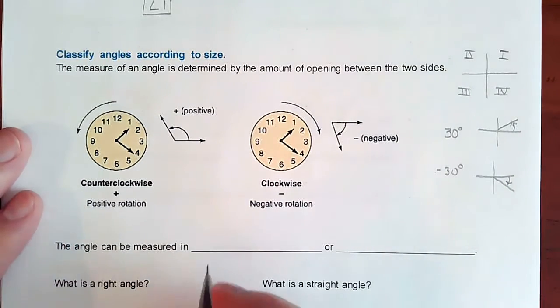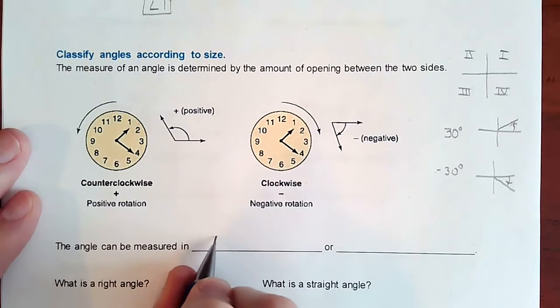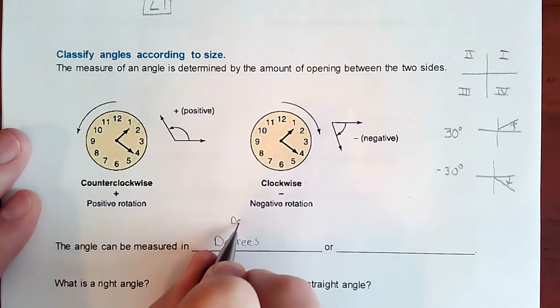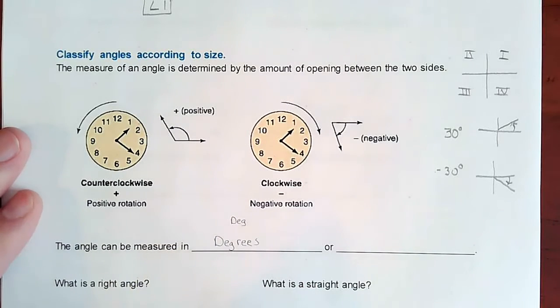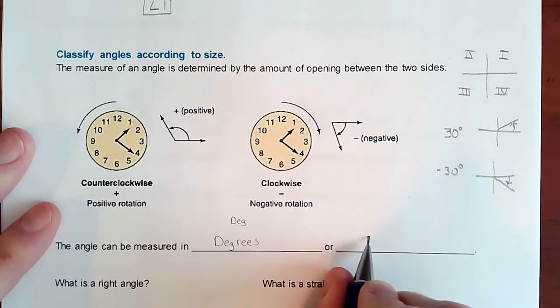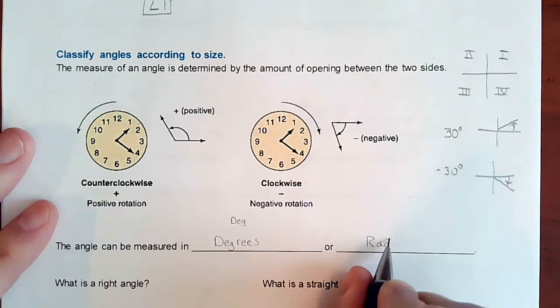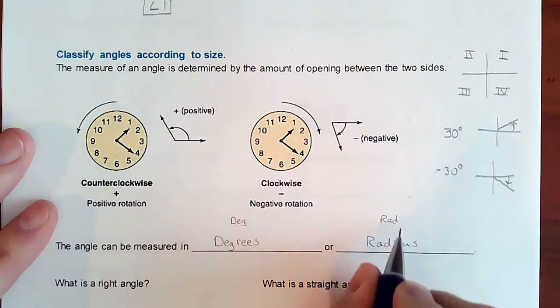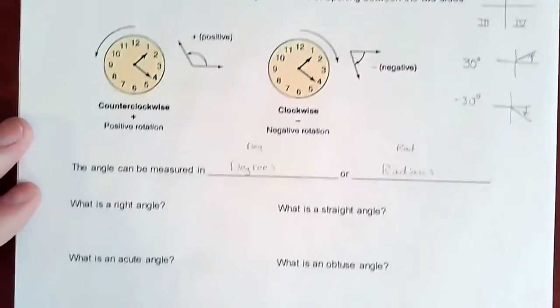Your angle can be measured in two different ways: degrees, which on your calculator you may see it abbreviated as deg, or radians, which is typically a newer way for most people to describe an angle. And it might be abbreviated as rad.